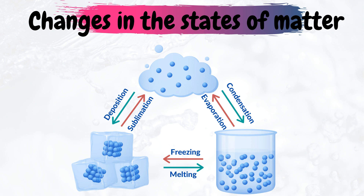Liquids can change from their state into a gas phase — this process we call evaporation. Gases can also change from a gas phase into a liquid, and we call this condensation. You may be familiar with evaporation and condensation from the water cycle, either from previous grades in primary school or high school.